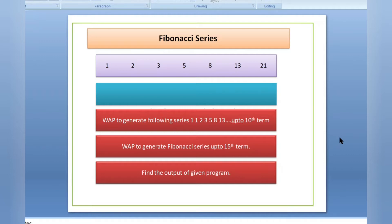Fibonacci series is a number series which follows these rules. Initially you need to take two numbers — that can be 1 and 1, 1 and 2, or 0 and 1. For now I am taking 1 and 2. The addition of the last two numbers will be the next number.